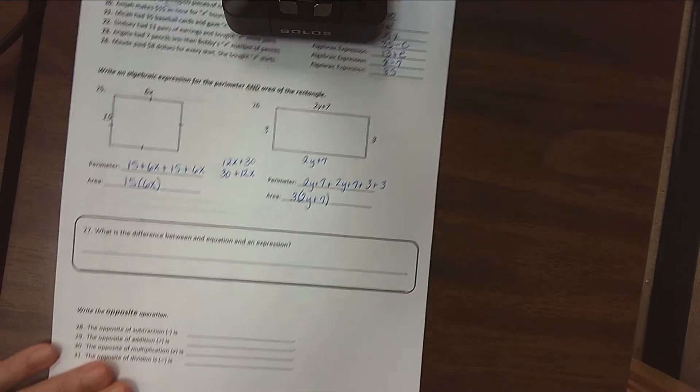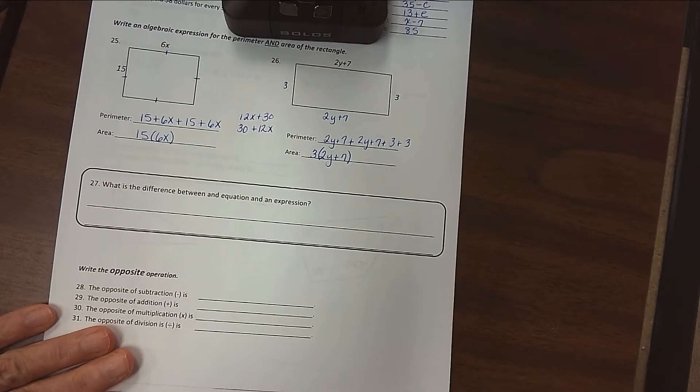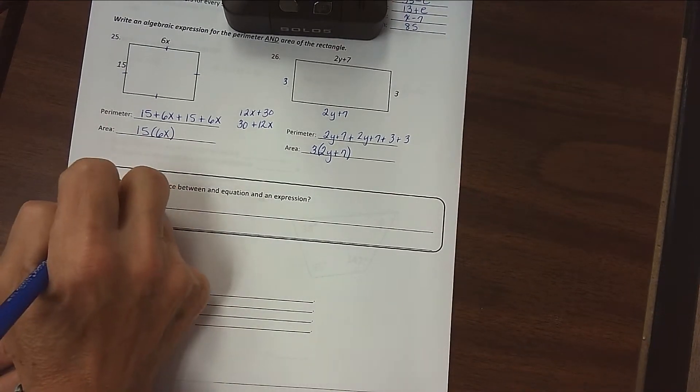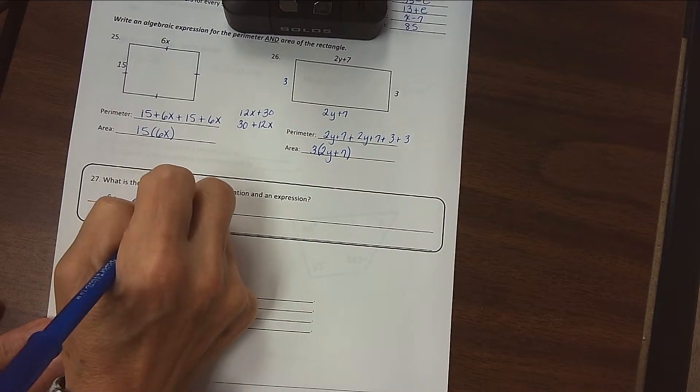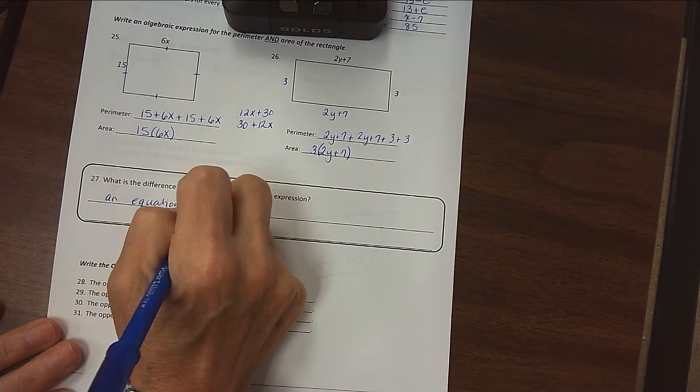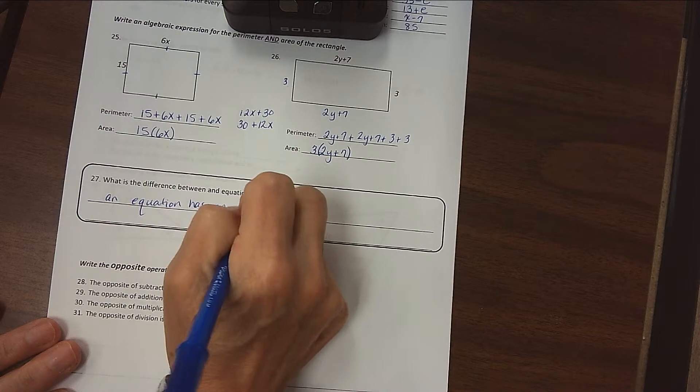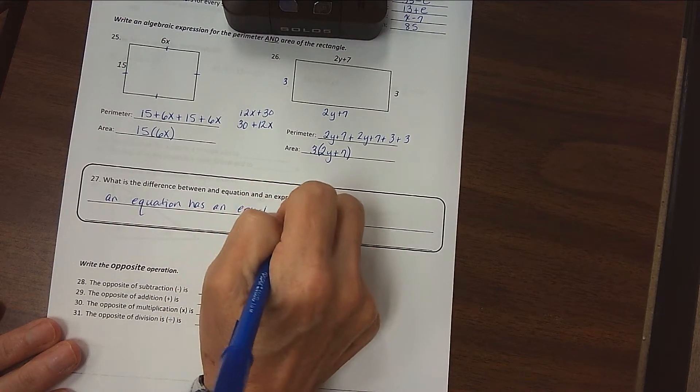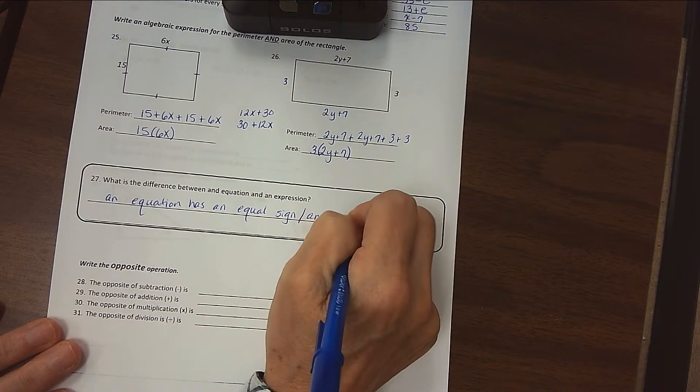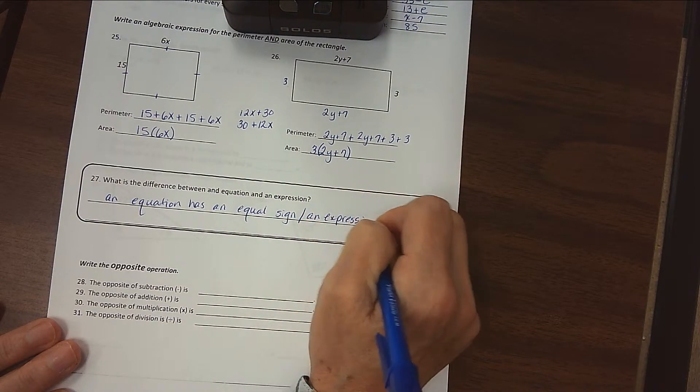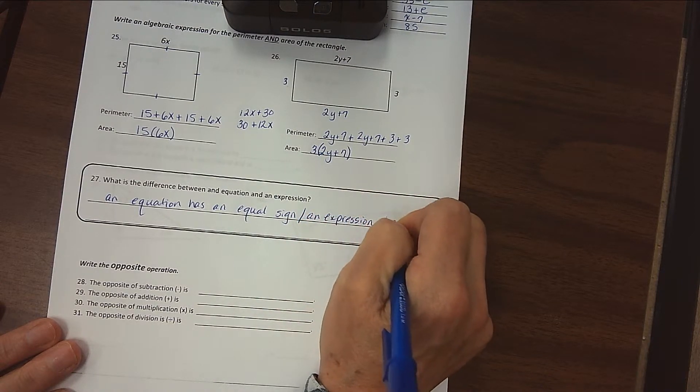All right. Difference between an equation and an expression? Very easy. An equation has an equal sign. An expression does not have an equal sign.